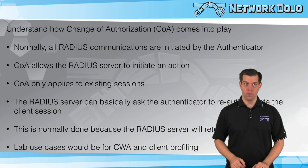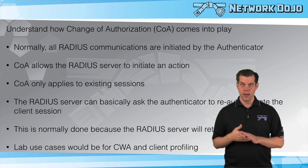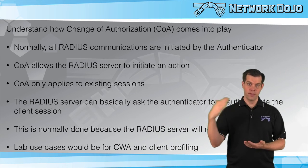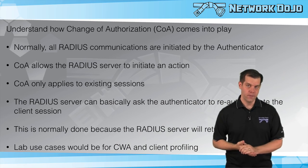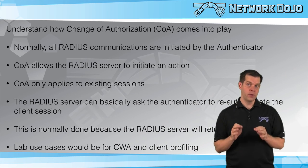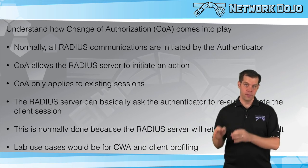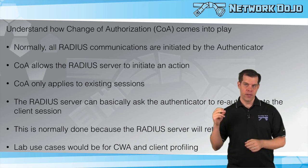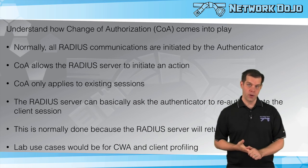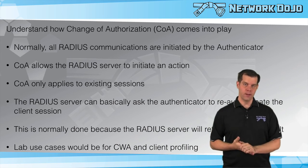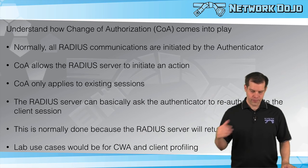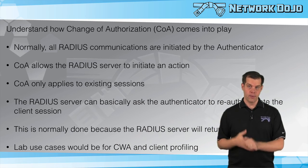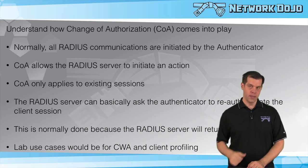With Change of Authorization, the RADIUS server can say — 'it's a smartphone, I want to put it somewhere else' — so it sends a CoA request. The authenticator requests a new authentication, which is sent up, hits a different rule, and we can place the client on the appropriate VLAN. Basically, ISE has learned some new piece of information that would give a different result if the client authenticated again. Rather than wait for a natural re-authentication, we initiate a new authentication through a CoA request and get that new result immediately.